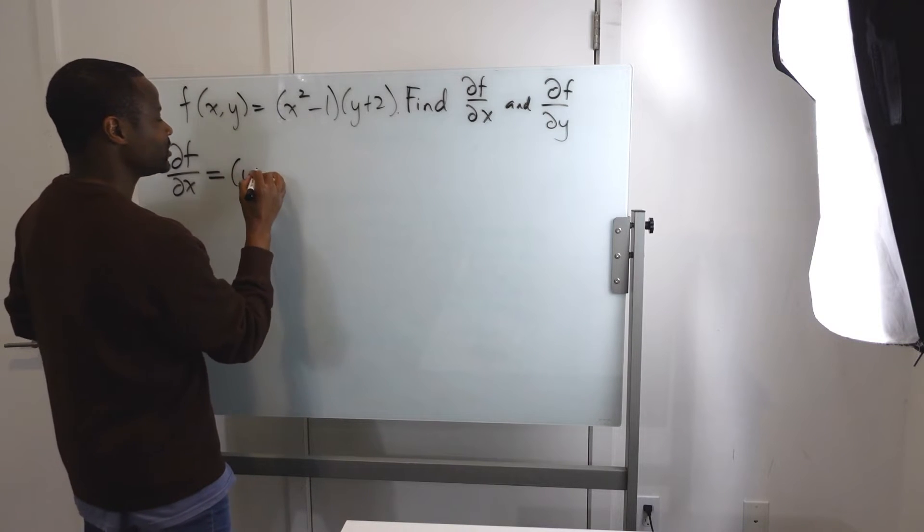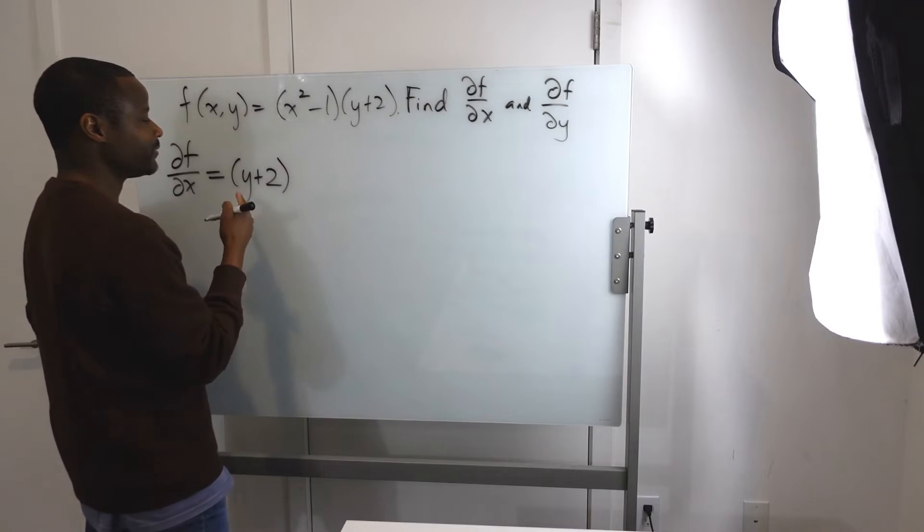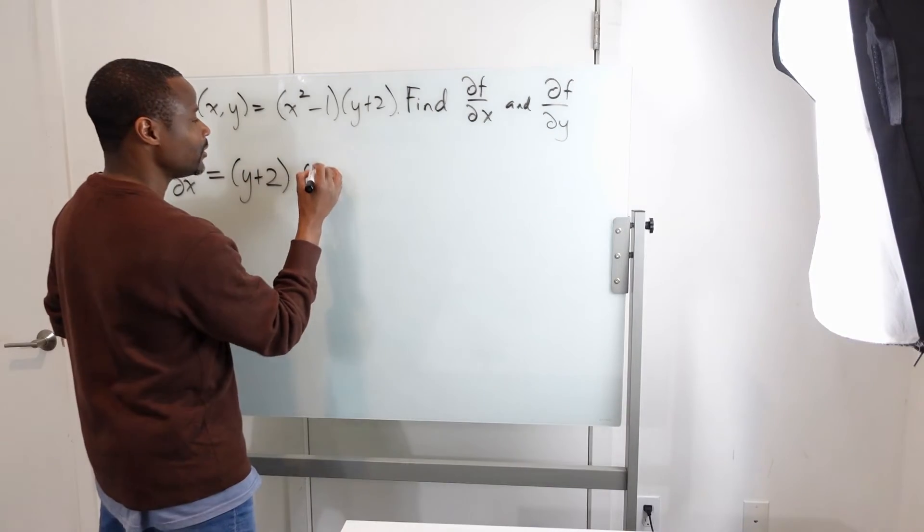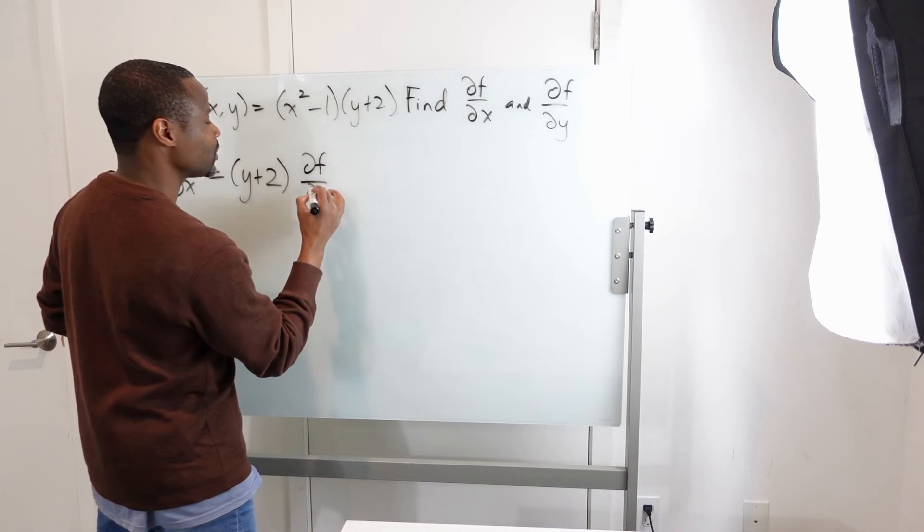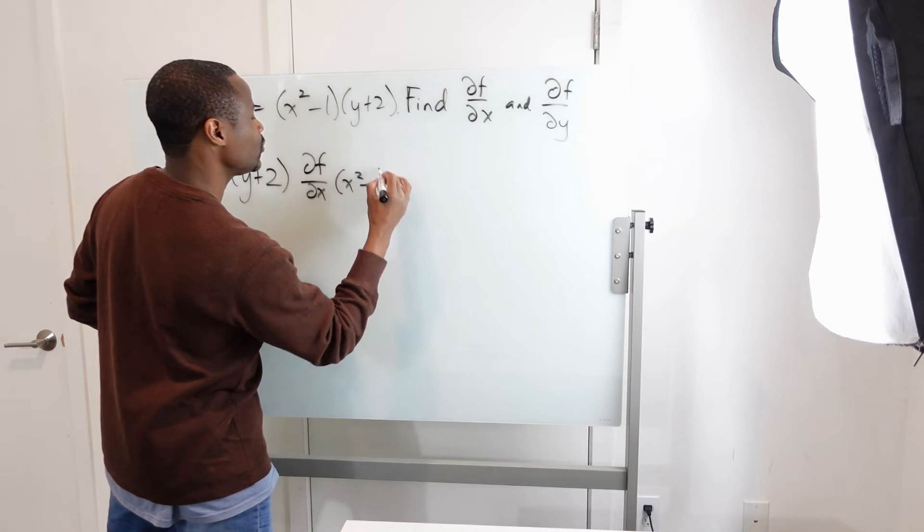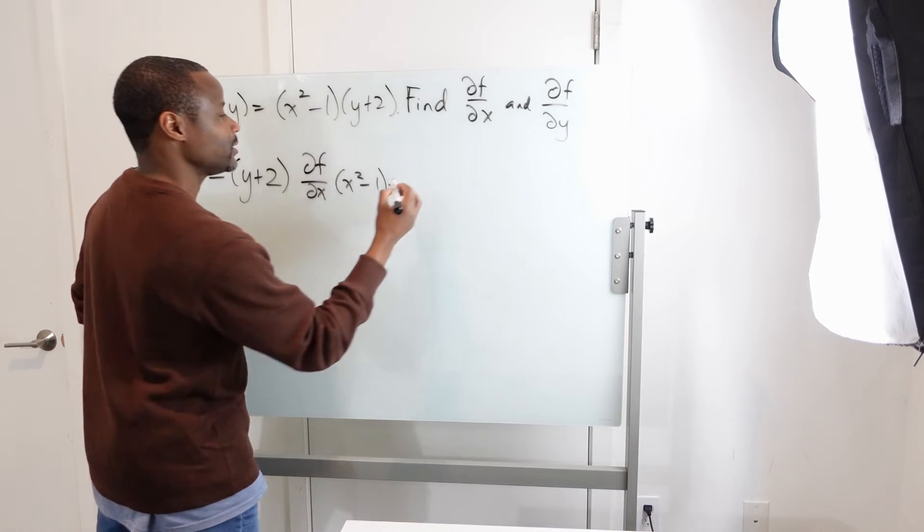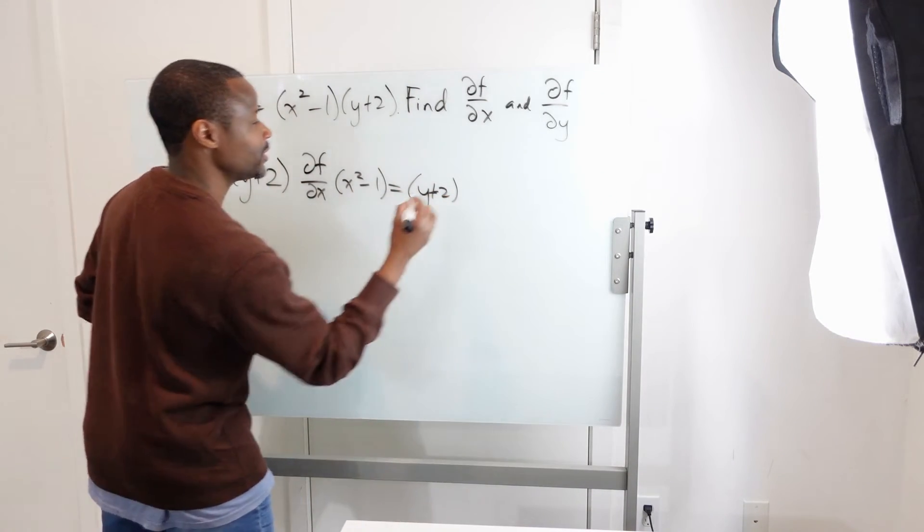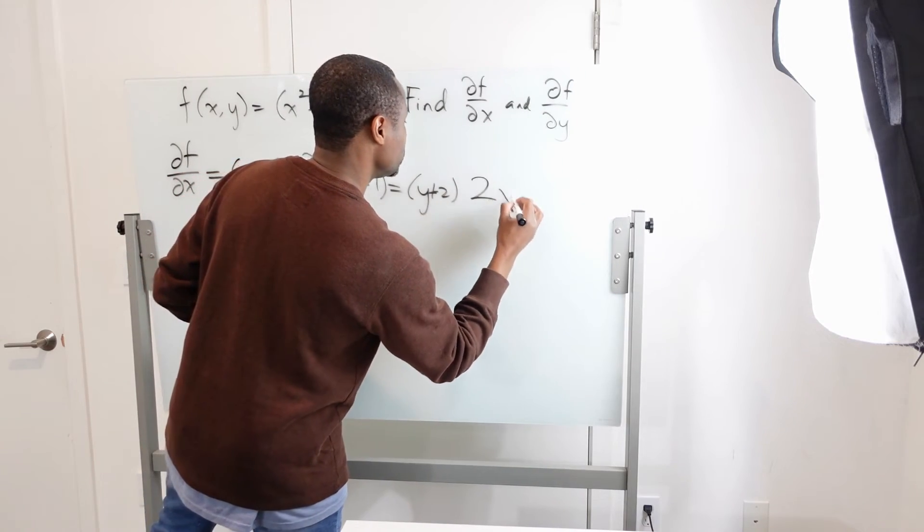So just like that y—more like a 15 or 24 or whatever constant—we'll pull it out and take the derivative of f with respect to x of x squared minus 1. What's that? y plus 2 times the derivative: x squared becomes 2x, and 1 goes to 0.